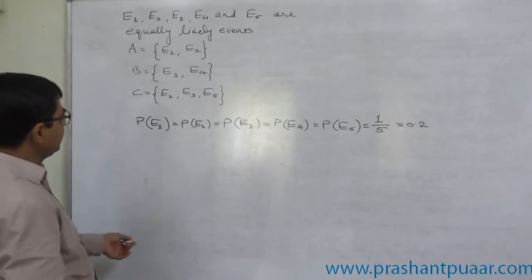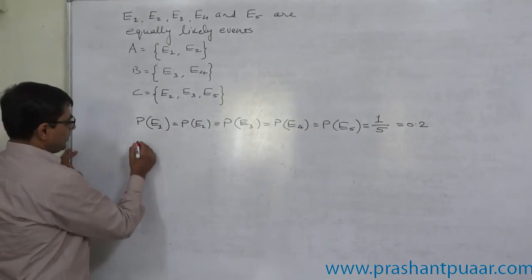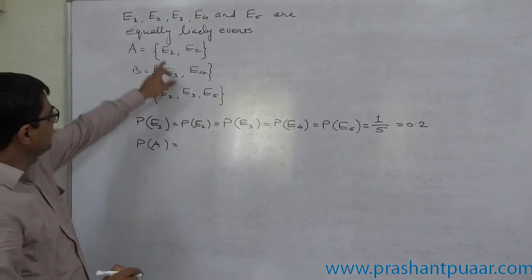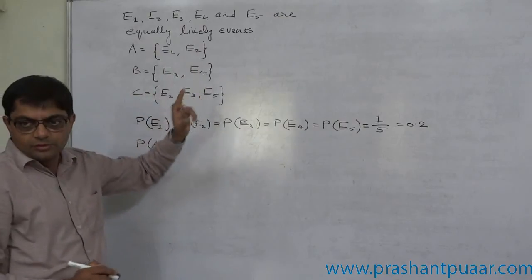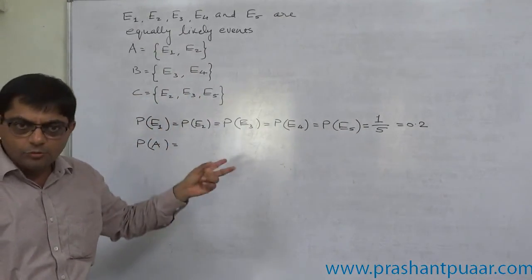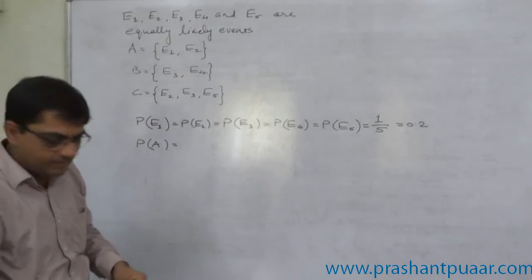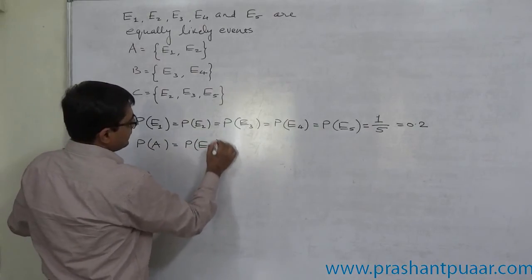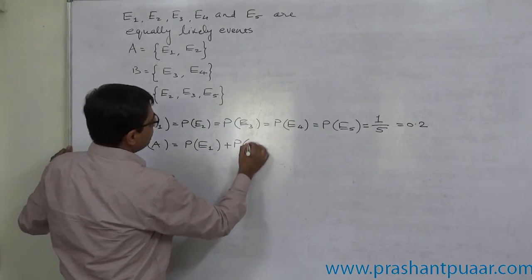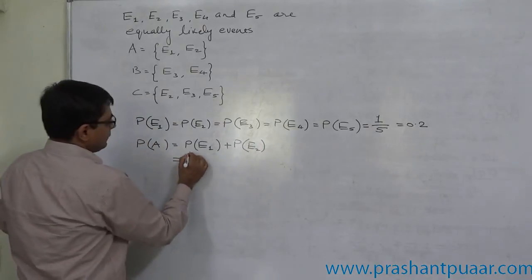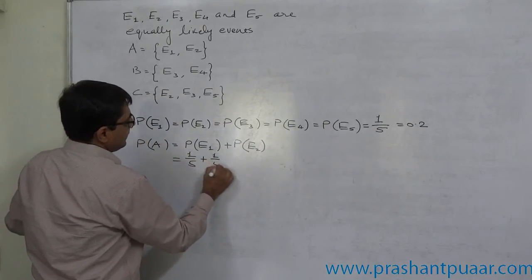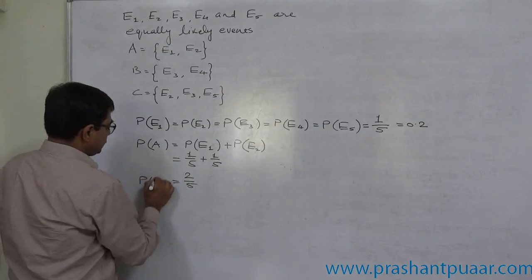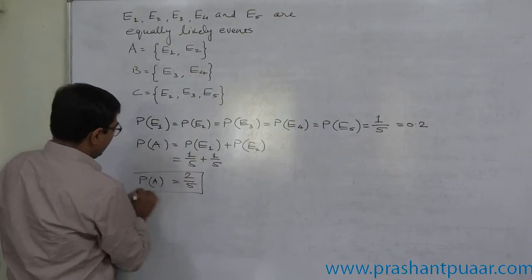Now we are interested in the calculation of some basic probabilities. First of all, what is probability of A? A is made up of E1 and E2. That means either E1 happens or E2 happens, we can say that A has happened. So probability of A is P of E1 plus P of E2, that means 1 by 5 plus 1 by 5. So it is 2 by 5. P of A comes to 2 by 5, or 0.4.